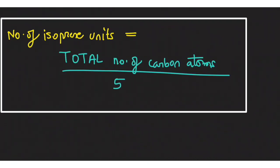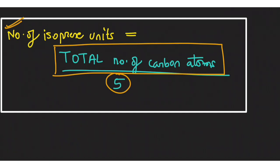So now if I move to the formula directly, that is number of isoprene units, the formula is total number of carbon atoms divided by five. That's a very easy and very important formula, which you have to keep in your mind.